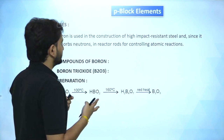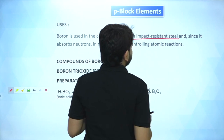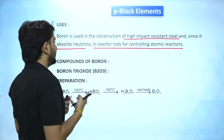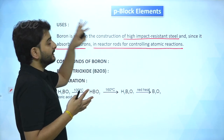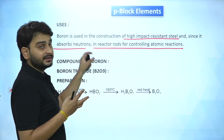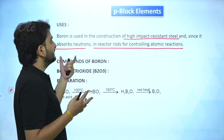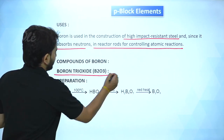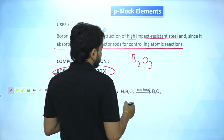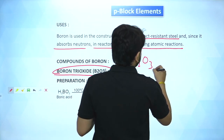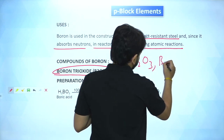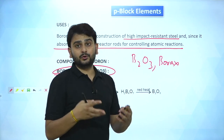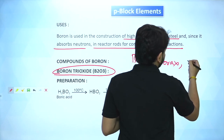Uses of boron: it is used in the construction of high-impact-resistant steel, and since it absorbs neutrons, it is used in reactor control rods for controlling atomic reactions in nuclear power plants. Important compounds of boron include: boron trioxide (B₂O₃), borax (Na₂B₄O₇) — a compound of sodium, boron, and oxygen — and diborane (B₂H₆).